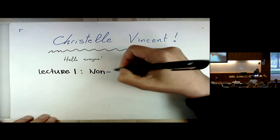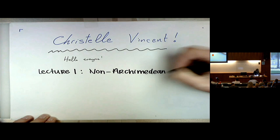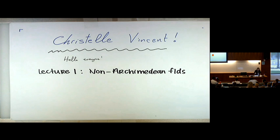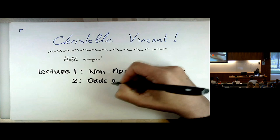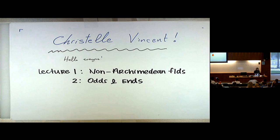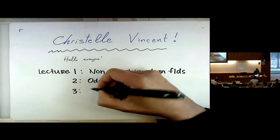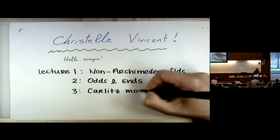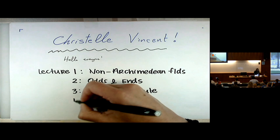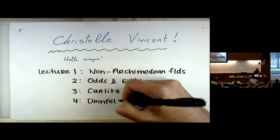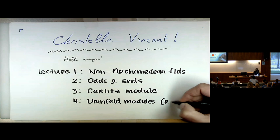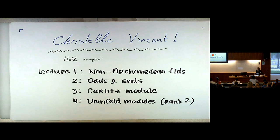Lecture one will be all about non-Archimedean fields — 'FLDS' is for fields because I was running out of space. Lecture two will be, I'll call it for now odds and ends: various things we need to know about function fields to continue with our lives. Lecture three, I will introduce the Carlitz module, which is a really good friend of mine and soon to be yours. And in lecture four, I'll talk about Drinfeld modules — that will be a big payoff. I'll focus on the rank two case but gesture at higher rank whenever I can.